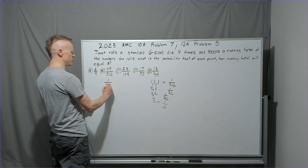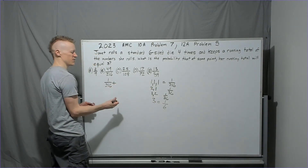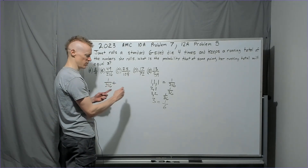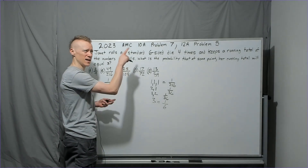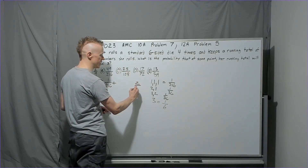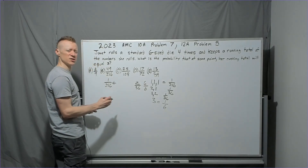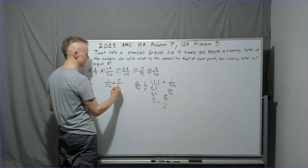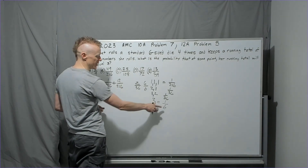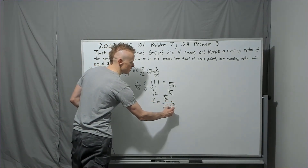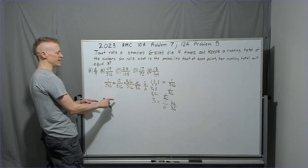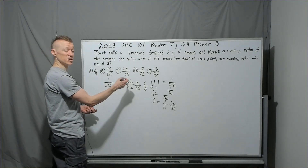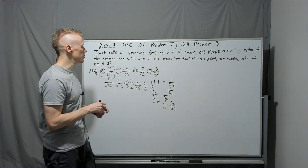Adding it all up: 1/216 plus two cases of 1/36. Converting to 216: that's 12/216. Then 1/6 becomes 36/216. So 1 + 12 + 36 = 49 out of 216. There are no common multiples of 7, so we're done. The answer is 49/216. On to problem eight.